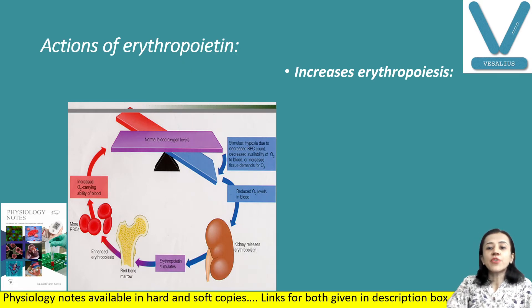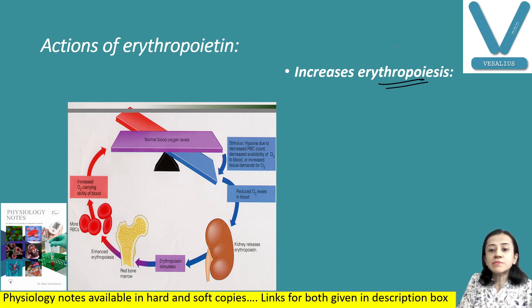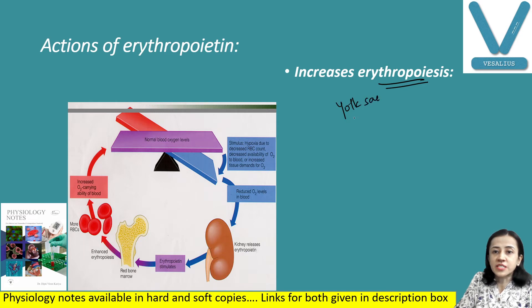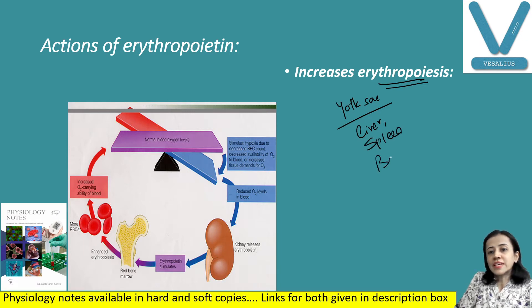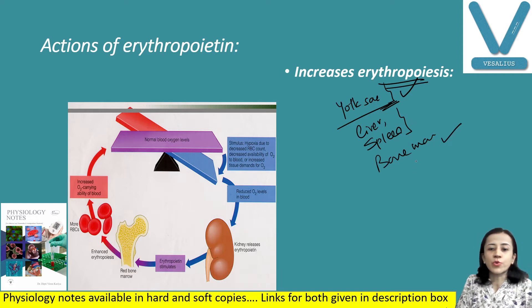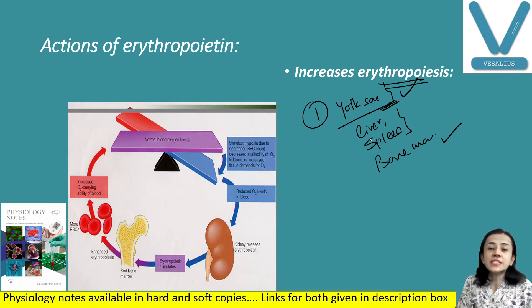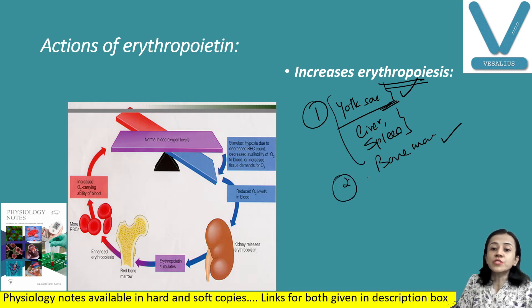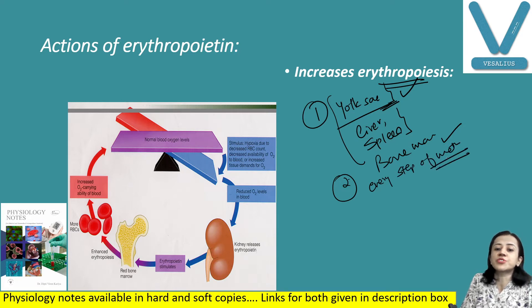The actions of erythropoietin: it acts by increasing erythropoiesis at the sites of erythropoiesis — yolk sac, liver, spleen, and bone marrow, depending on age. It also promotes every step of the maturation of RBCs.